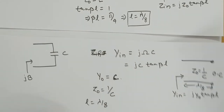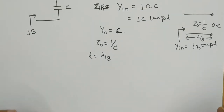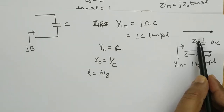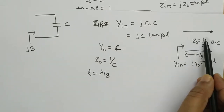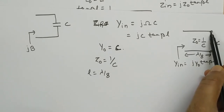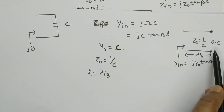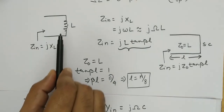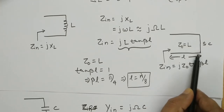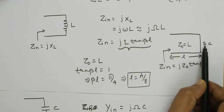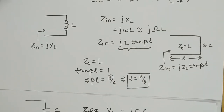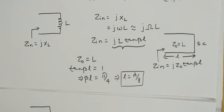So this method is called Richards transformation. Wherever we have a capacitance, we use a λ/8 long transmission line with characteristic impedance 1/C terminated with an open circuit. If we have an inductor, we use the same λ/8 length transmission line terminated with a short circuit. This is Richards transformation, and it is the first step we must do while implementing a filter.